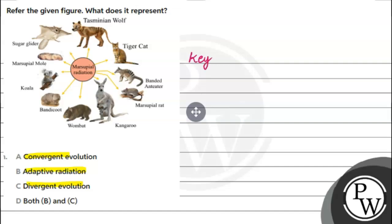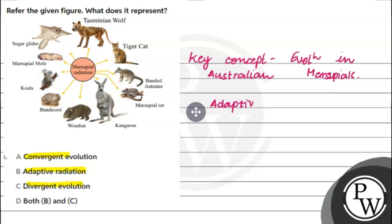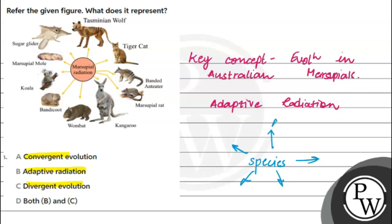The answer involves a key concept we will learn: Evolution in Australian Marsupials. The first topic is adaptive radiation. When a common species of organisms migrates to different geographical areas and develops into new species, that phenomenon is called adaptive radiation.